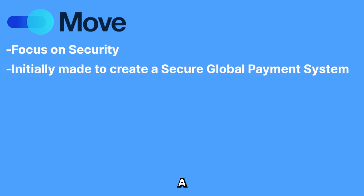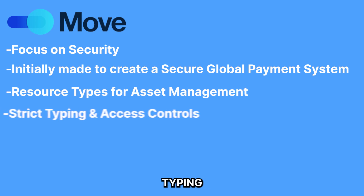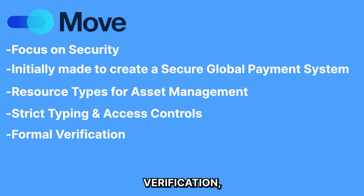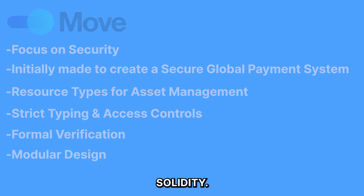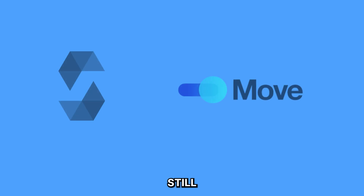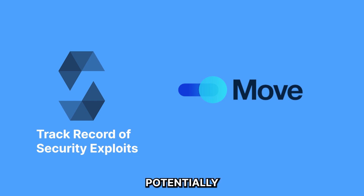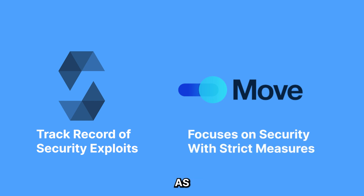Move on Sui, on the other hand, is well-known for its focus on security, being initially designed to create a stable and secure global payment system. The Move language was designed with core features that enhance its security, such as using resource types for asset management, strict typing and access controls, formal verification, and modular design — also benefiting from lessons learned from the several exploits that have occurred on Solidity. Overall, while Solidity is still very popular for creating smart contracts, it is more prone to hidden bugs and potentially dangerous exploits, even though better coding practices are being encouraged over time. However, Move on Sui is very focused on remaining as secure as possible to keep applications as safe as possible.